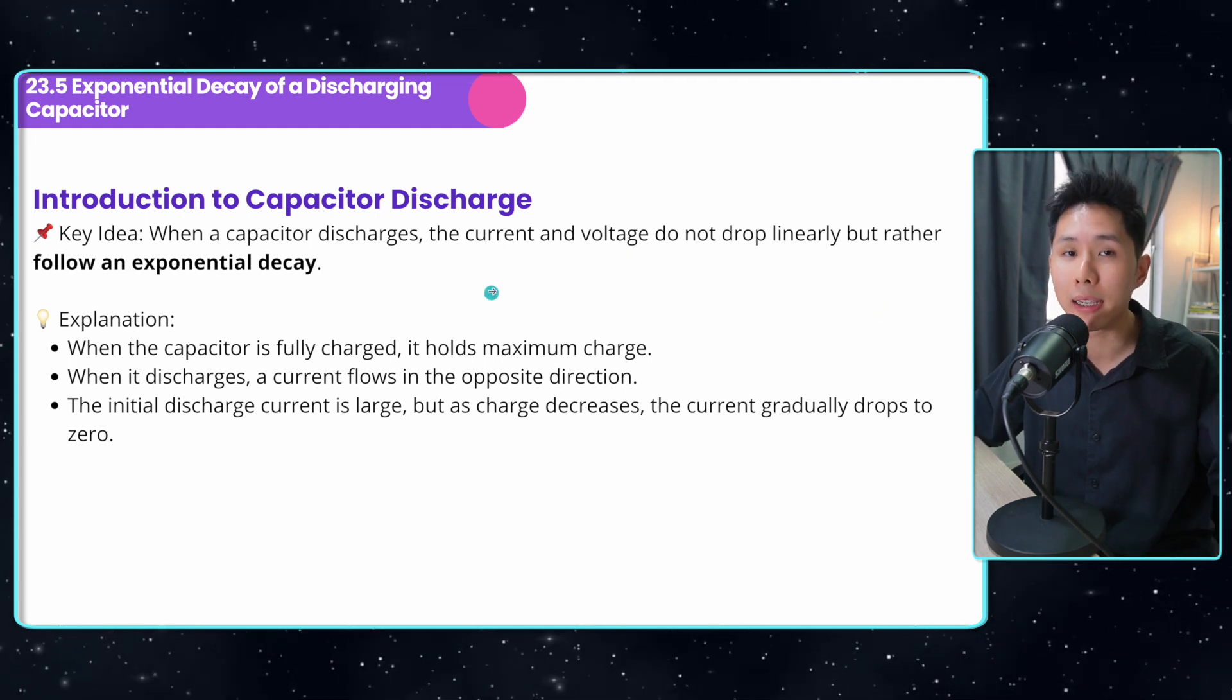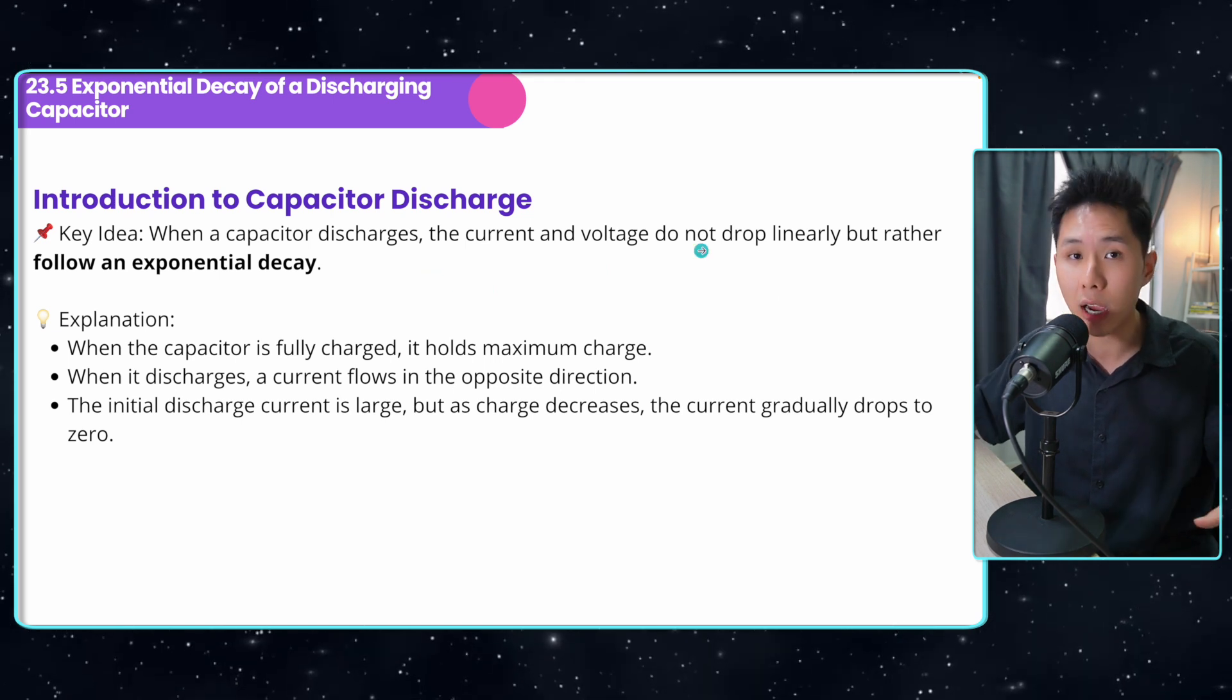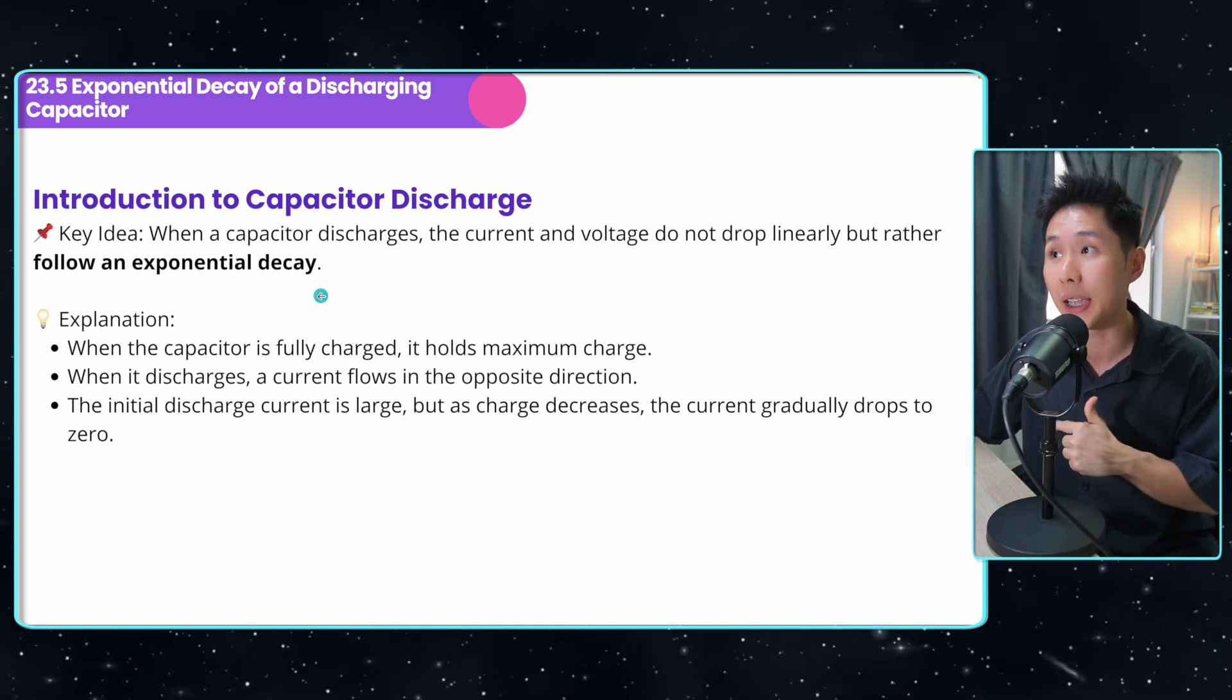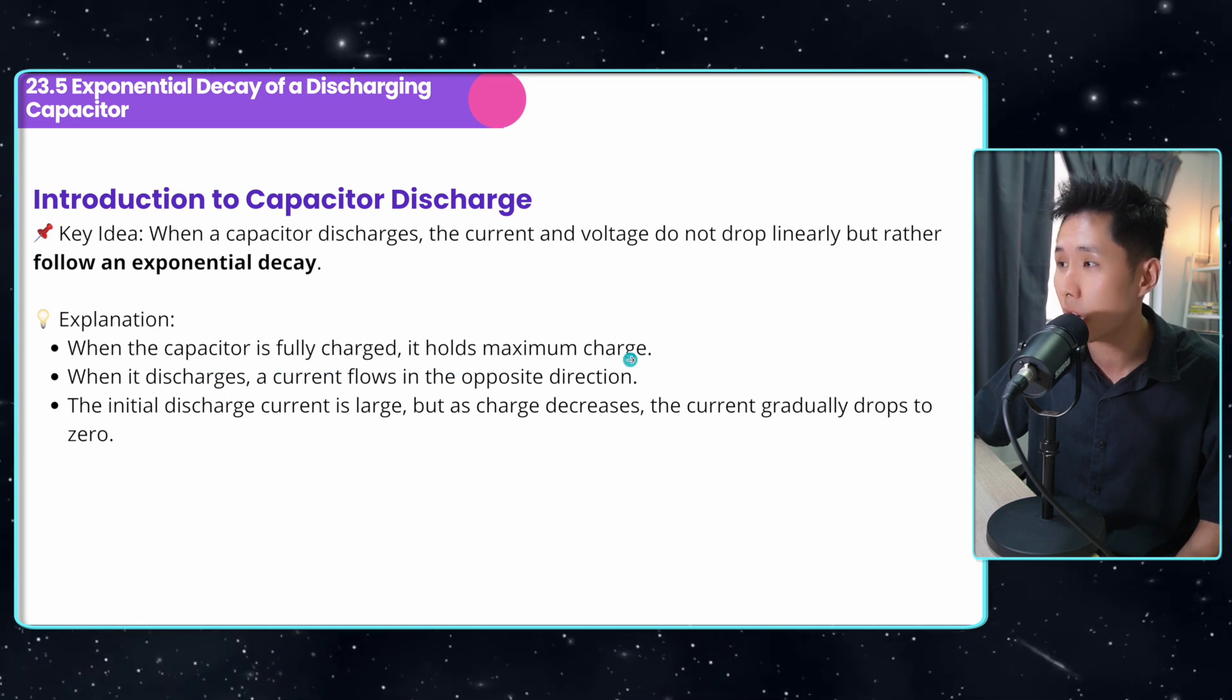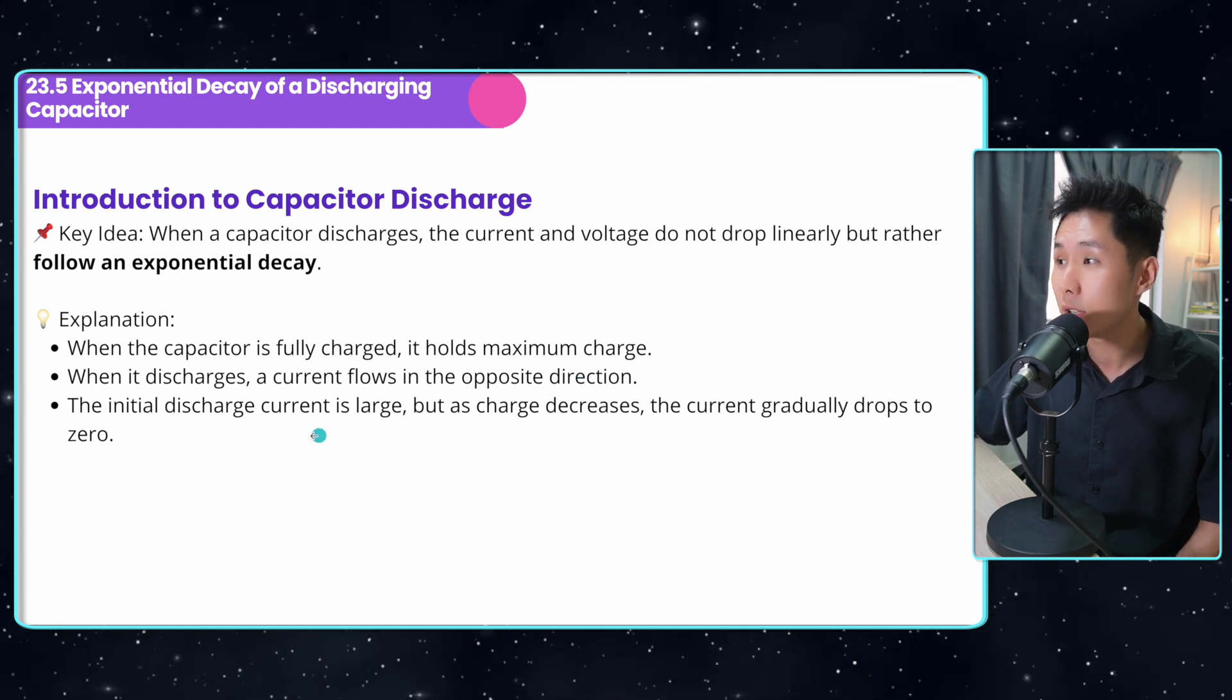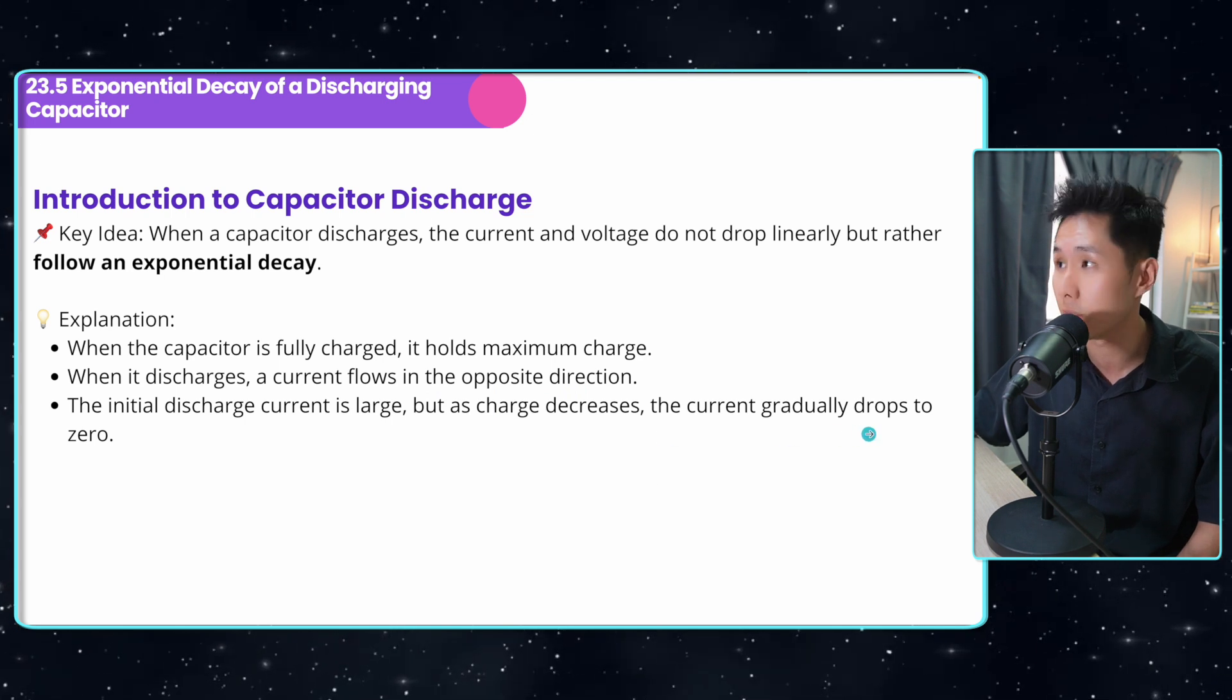Now let's look into what happens when a capacitor discharges. And one thing you have to know is when they discharge, the current and voltage do not drop linearly, but follow an exponential decay as I will show you in the graph later. So the explanation is that when the capacitor is fully charged, it holds maximum charge. When it discharges, current flows in the opposite direction. The initial discharge current is very big, but as charge decreases, the current gradually drops to zero.